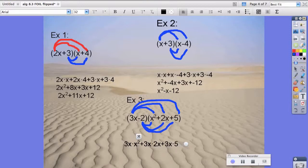So, we're multiplying, plus negative 2 times x squared, plus negative 2 times 2x, plus negative 2 times 5.